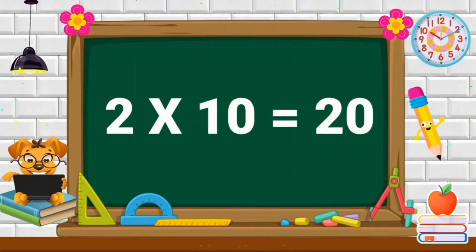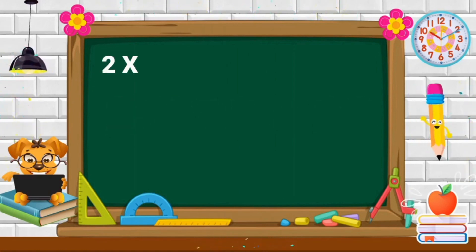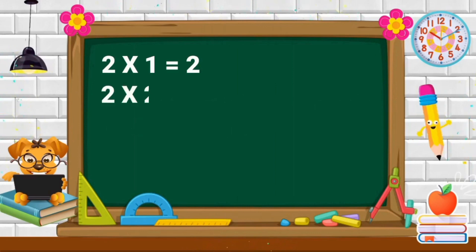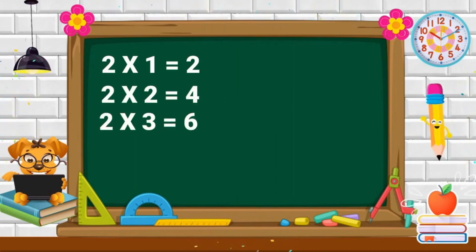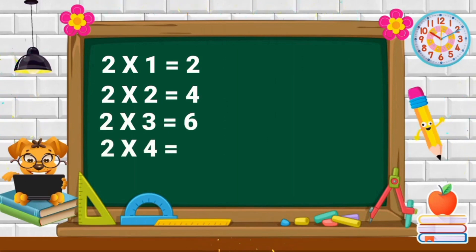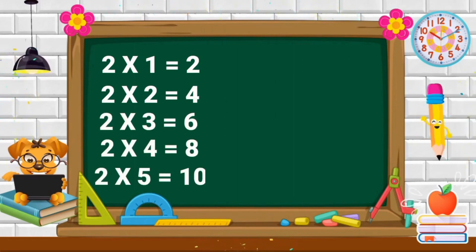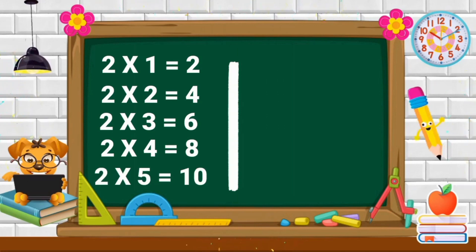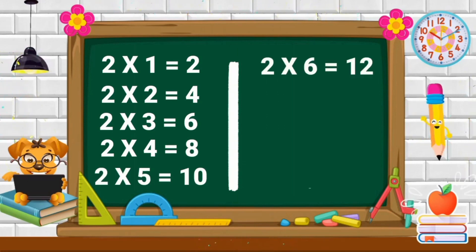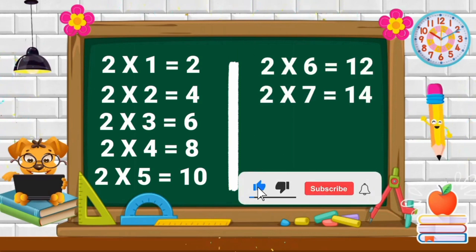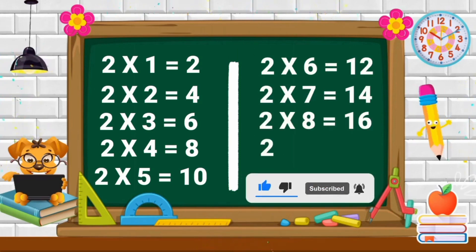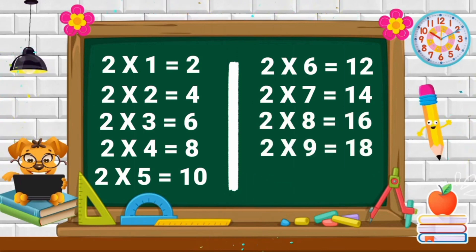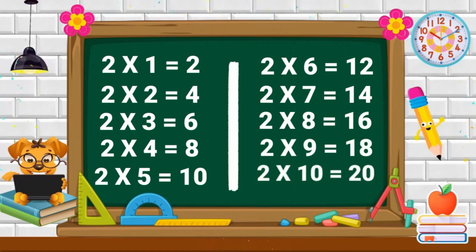Two tens are twenty. Repeat again. Two ones are two. Two twos are four. Two threes are six. Two fours are eight. Two fives are ten. Two sixes are twelve. Two sevens are fourteen. Two eights are sixteen. Two nines are eighteen. Two tens are twenty.